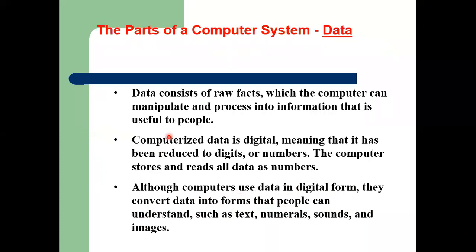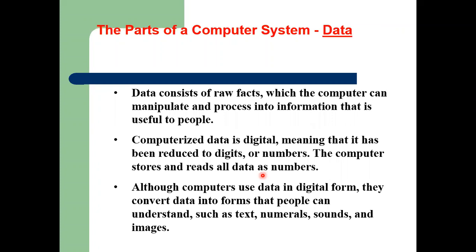Data consists of raw facts which the computer can manipulate and process into information useful to people. Computerized data is digital — it is in the form of 1s and 0s, binary. Data has been reduced to digits or numbers; the computer stores and reads all data as numbers. For example, a photo file that you see — the computer takes it in the form of binary numbers. Behind all files, folders, and videos there are certain numbers in which they are actually saved.